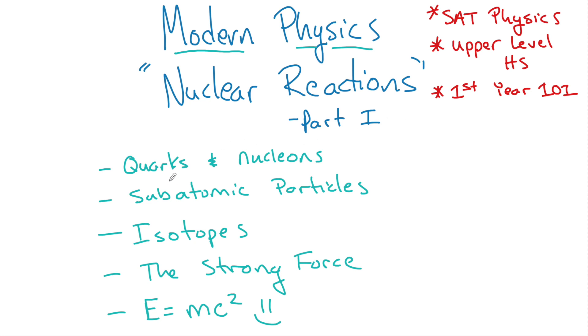This would be good for anybody that's taking the SAT physics exam. This would be everything you need to know for an upper level physics class, or maybe your first year one-on-one type of physics course, everything you really need to know, scratch of the surface type stuff. In this video, we're going to talk about quarks and nucleons, subatomic particles, isotopes and how isotopes lead to nuclear reactions, the nuclear strong force, and then we will introduce E equals MC squared, the most famous physics formula there is.